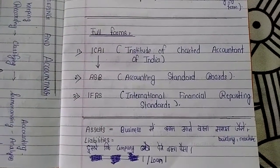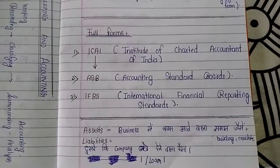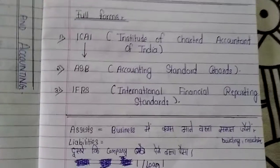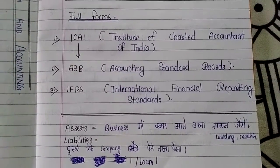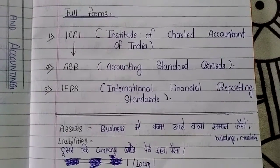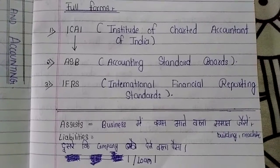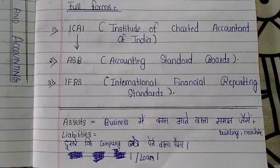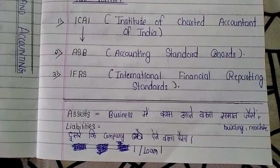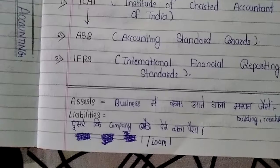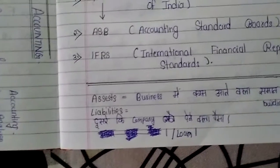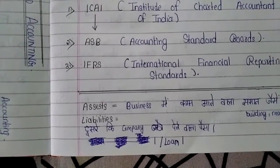Now I am going to introduce two words that will be super useful for the rest of your accounting studies. First is assets — things in a business such as building, machine, land, and furniture. All business assets will give us a benefit in the future. The second word is liabilities, which means money we have to pay someone — that loan is a liability for us.